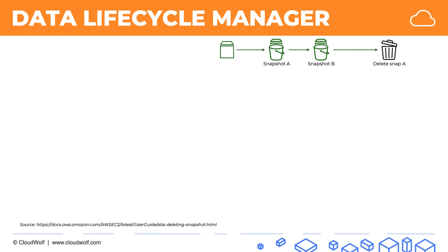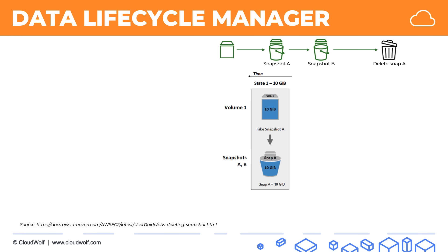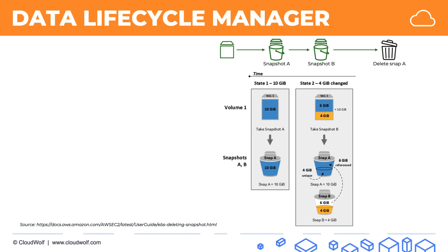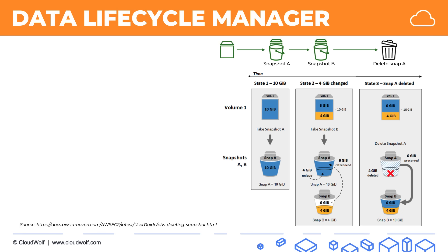In terms of incremental snapshots, here is an example. We have an EBS volume, snapshot A, then snapshot B, and then we delete snapshot A. At the start, we have 10 gigabytes in our volume and they are all copied into snapshot A. Then after some time, 4 gigabytes of data are changed in the volume. So when we take snapshot B, it only stores 4 gigabytes, and the other 6 that were unchanged are referenced from snapshot A. When snapshot A is deleted, those 6 referenced gigabytes are preserved and moved into snapshot B. What actually gets deleted are only the 4 gigabytes unique to snapshot A — the old data that has changed and is no longer needed. The reference data is preserved and moved into the snapshot that is referencing it.